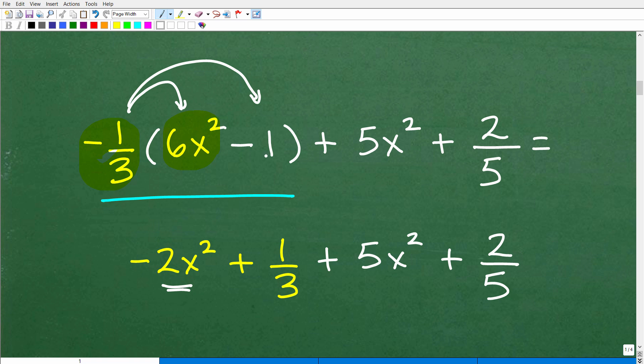All right, so negative one-third times this negative one right here is going to give us a positive one-third. All right, so that's a step. That's the result of taking our first step using the distributive property.